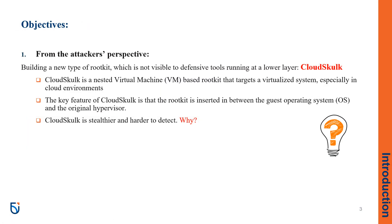Based on what I explained in the previous slide, we have two goals in this paper. We can see it from the attacker's perspective and from the defender's perspective. First, we assume an attacker's role and explore the possibility of building a new type of rootkit which is not visible to defensive tools running at a lower layer. In particular, we propose CloudSkulk, which is a nested virtual machine-based rootkit that targets a virtualized system, especially in cloud environments. The key feature of CloudSkulk is that the rootkit is inserted in between the guest operating system and the original hypervisor.